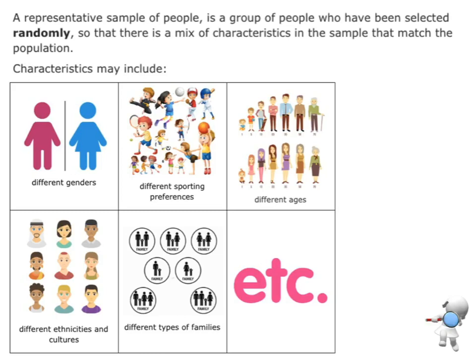If I'm thinking about taking a sample of people, which is often what we do, then we want to have a group of people that have been selected randomly so we've got a mix of characteristics. For example, I want to have two groups, and in these two groups I want to have both males and females, people who enjoy different sports, people of different ages, different ethnicities and cultures and types of families in both groups. That's what I want—a representative sample.